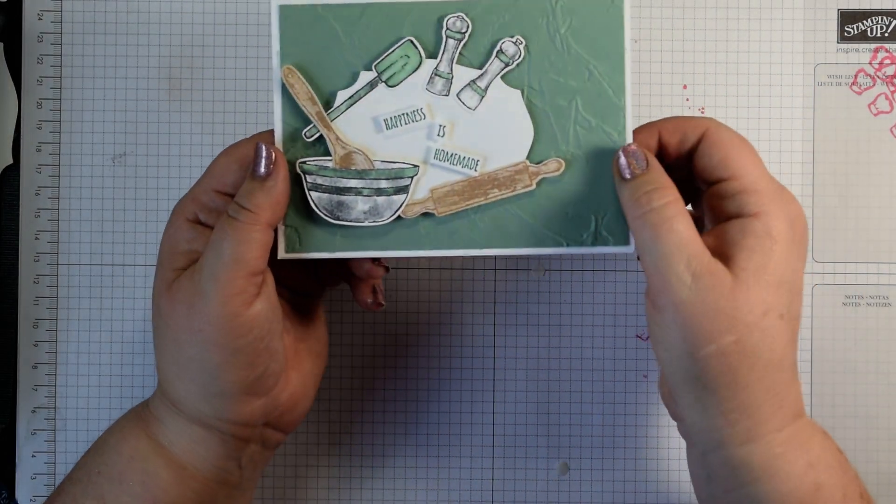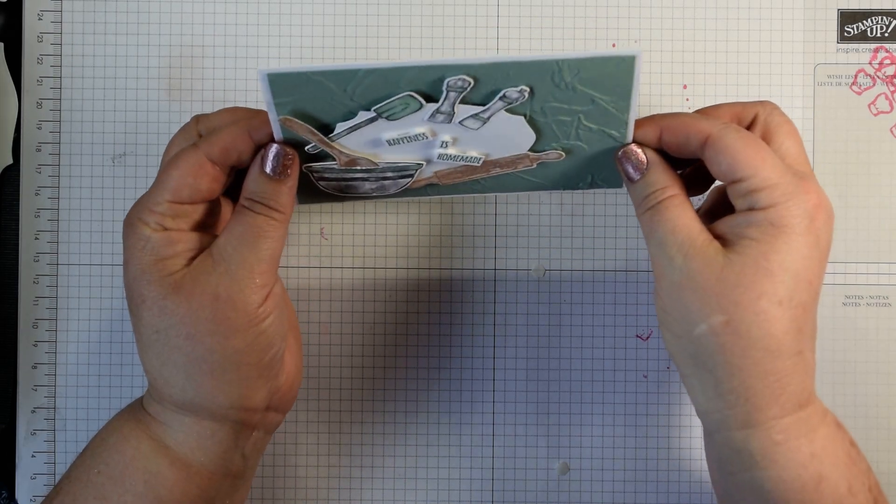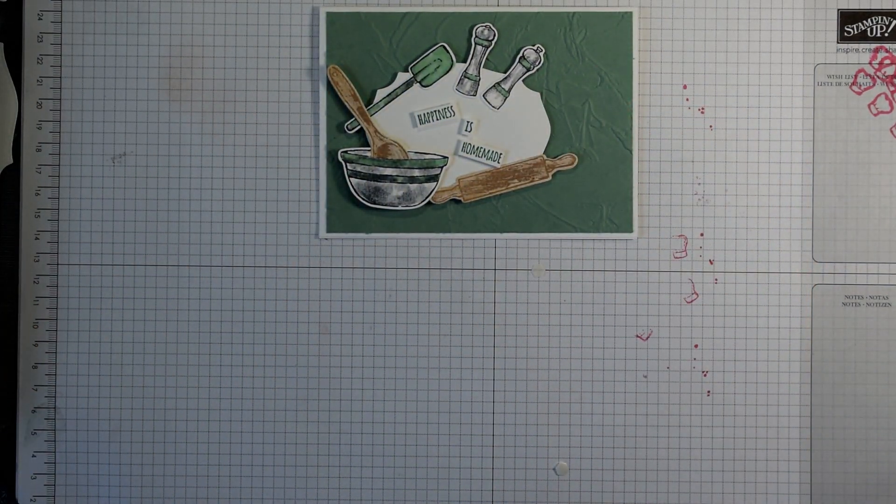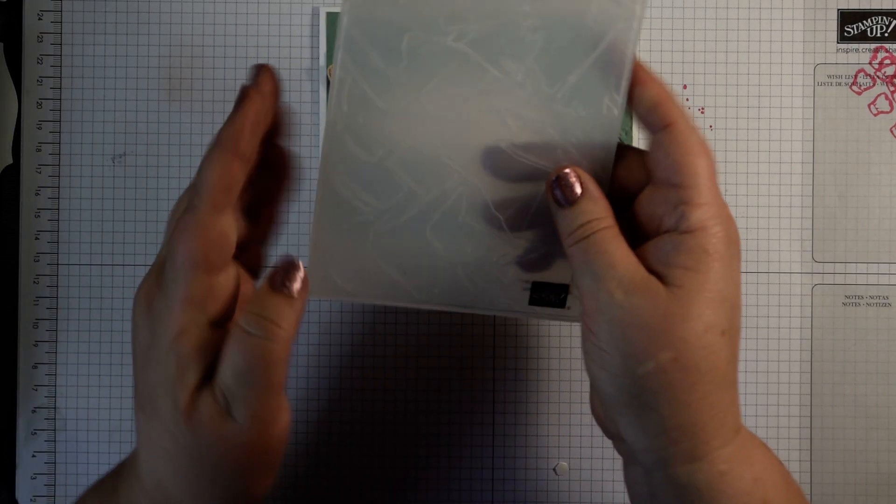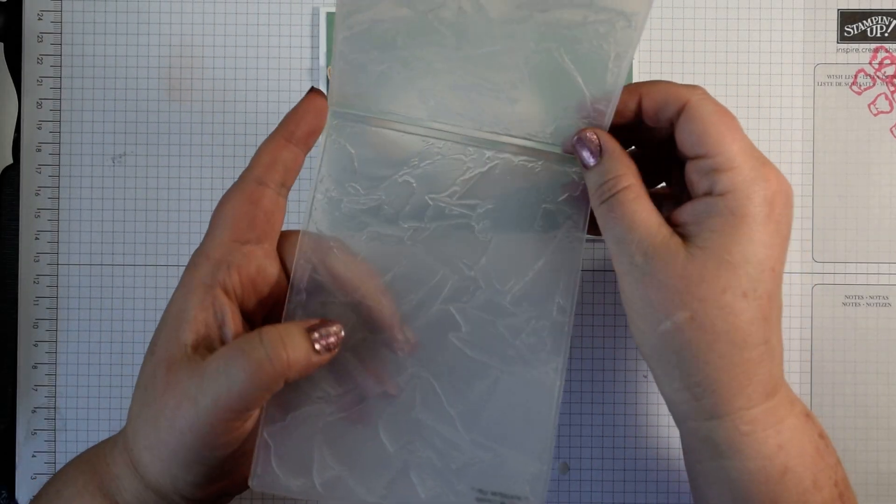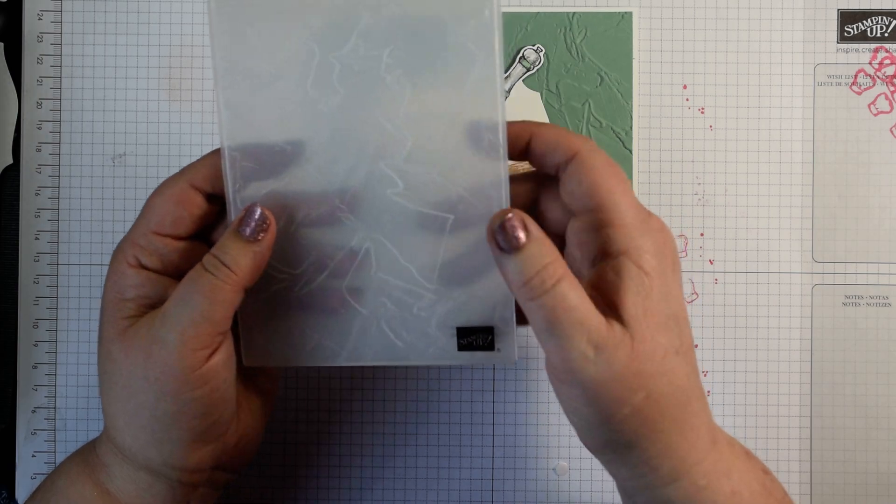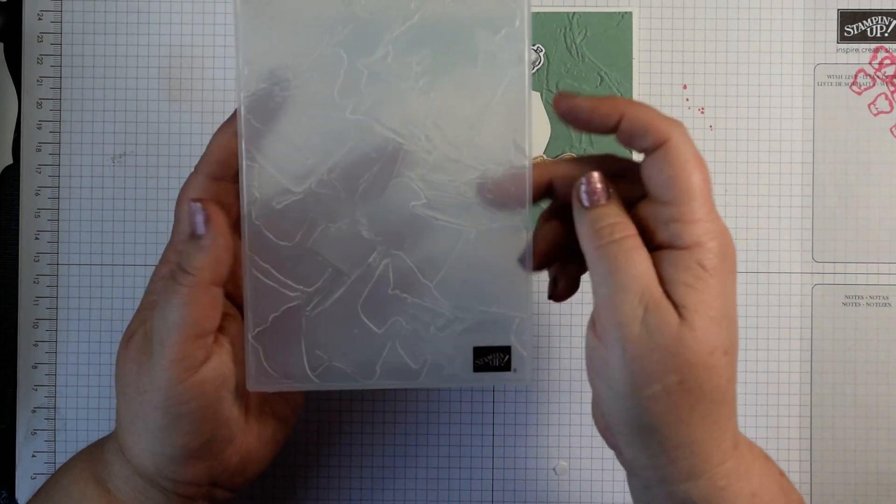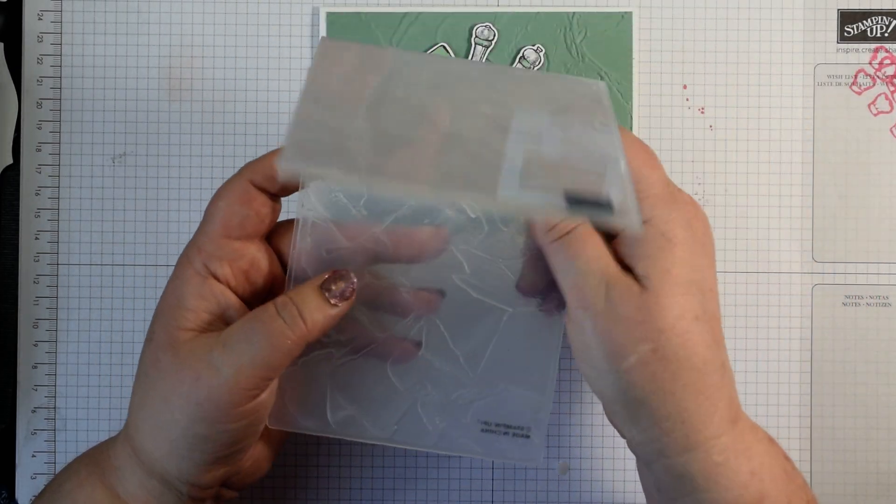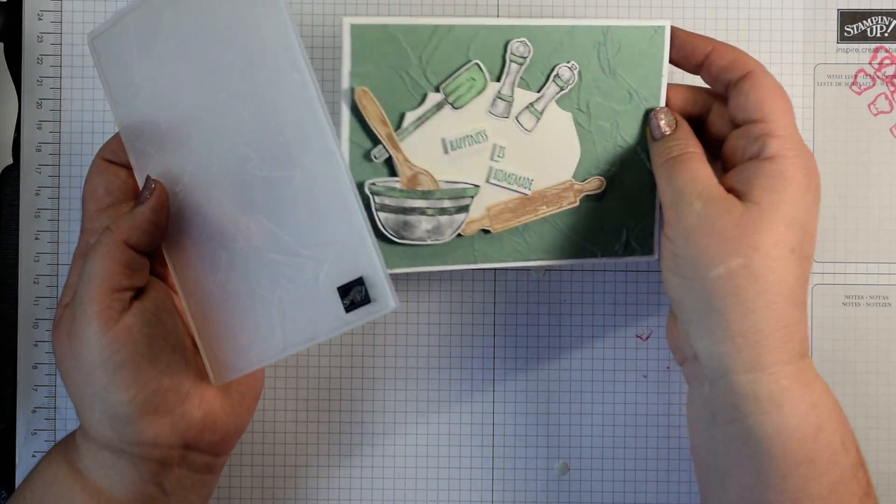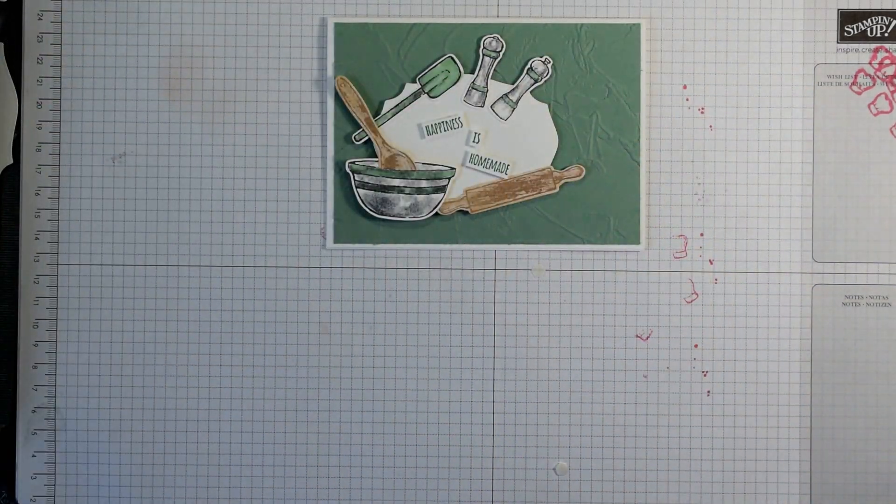I'll show you how you can get that effect, creating quite a bit of dimension. I've used the texture folder, I can't remember what it's called, painted texture? I think it's painted texture. I'll have to look it up and put the link in the description below, but it's a 3D embossing folder so you get lots of real texture in that card that looks absolutely fabulous.